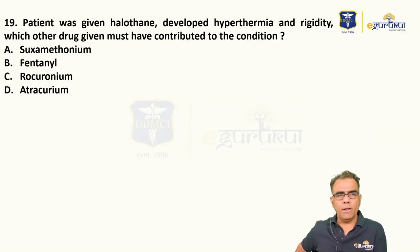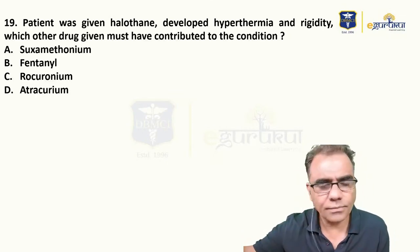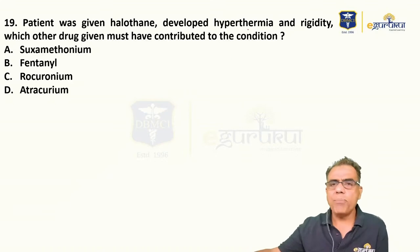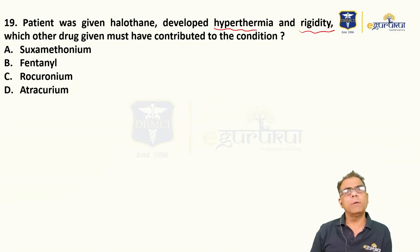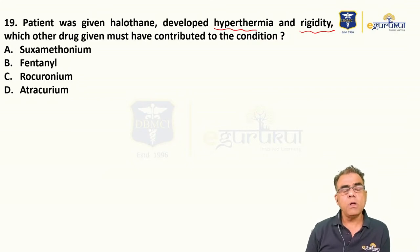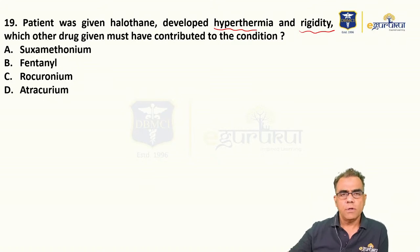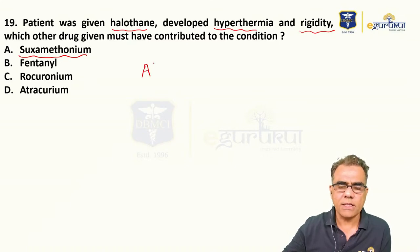Question number nineteen: Patient given halothane developed hyperthermia and rigidity. Which other drug must have contributed? Options: suxamethonium, fentanyl, rocuronium, atracurium. Hyperthermia and rigidity indicate malignant hyperthermia. The most commonly implicated drug is suxamethonium. Malignant hyperthermia can occur with all inhalational agents, and among them it is maximally seen with halothane. So other than halothane, the even more commonly implicated drug is suxamethonium. Answer: suxamethonium.